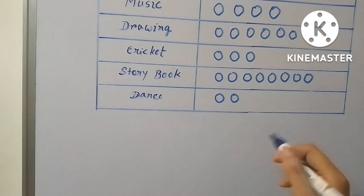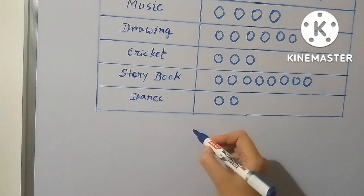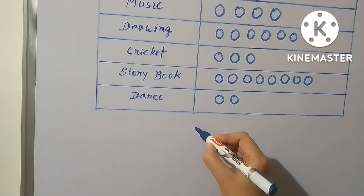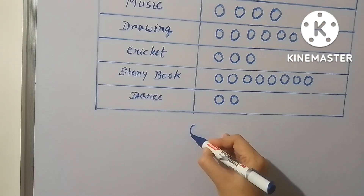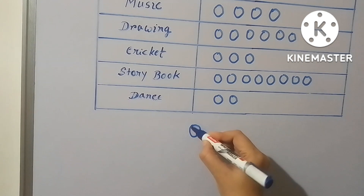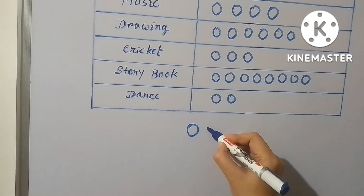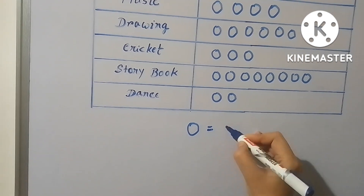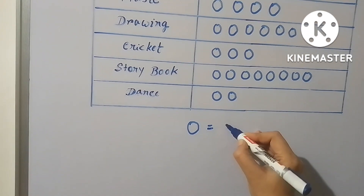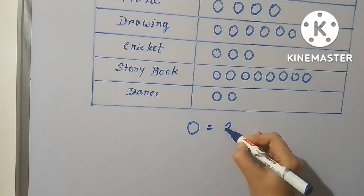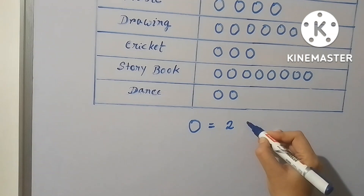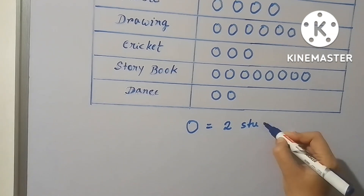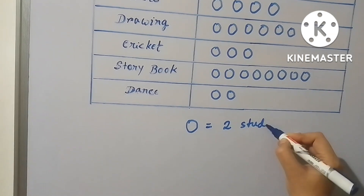That key will denote the exact number of students loving those hobbies. One circle will be equal to two students, so two circles will be equal to four students. This is like multiplying by two — we can get the exact number of students belonging to these hobbies.